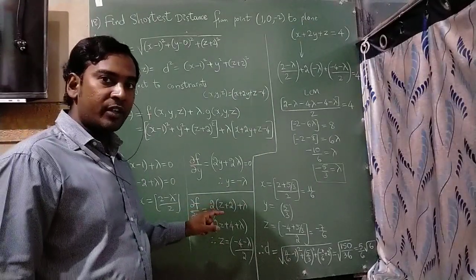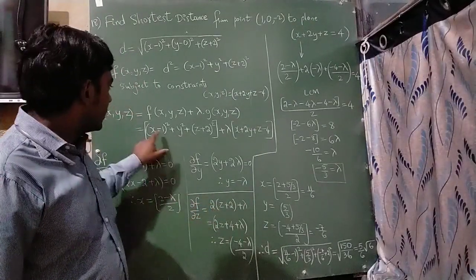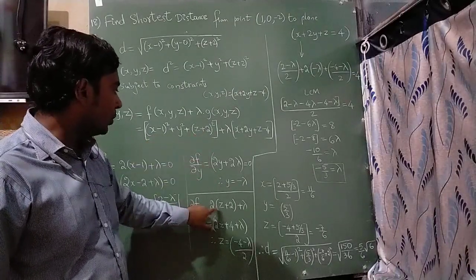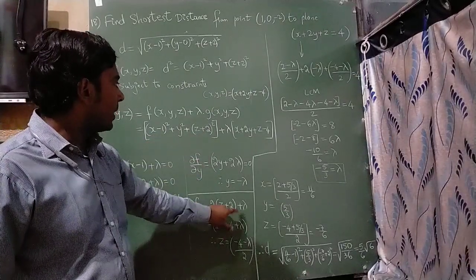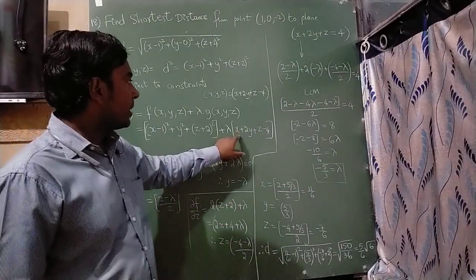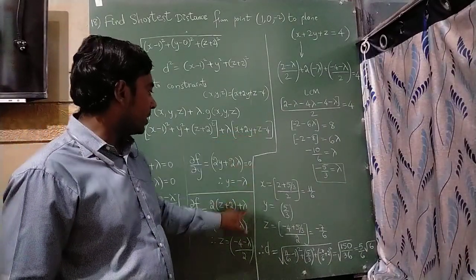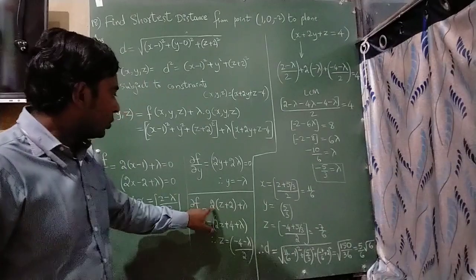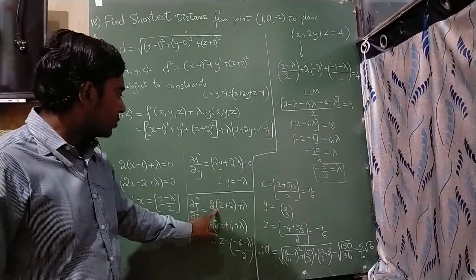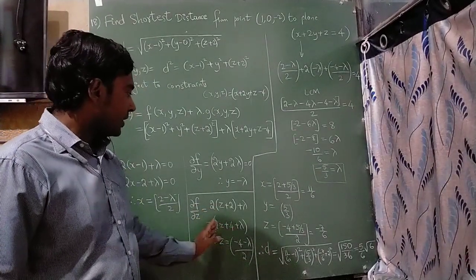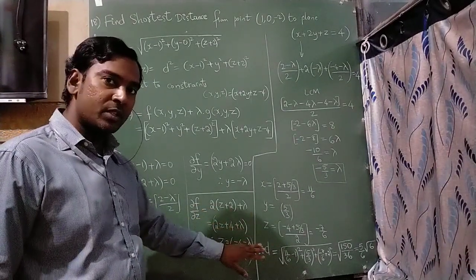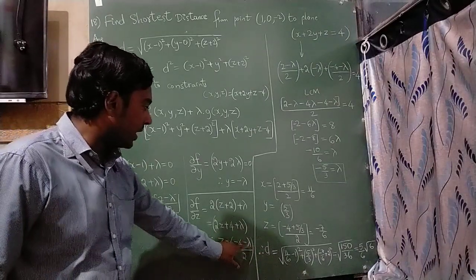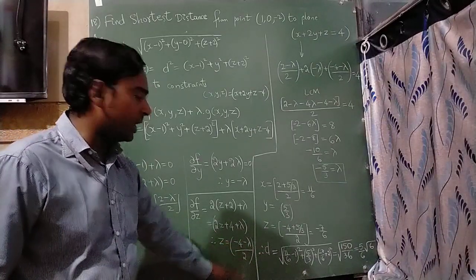Differentiating with respect to z: x and y terms become 0, (z + 2)² becomes 2(z + 2), and the constraint gives λ. So 2z + 4 + λ = 0, giving z = (-4 - λ) / 2.